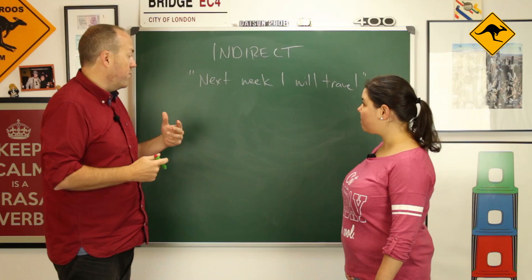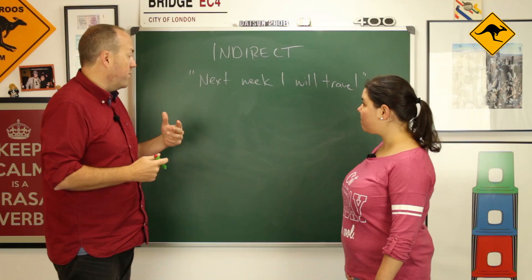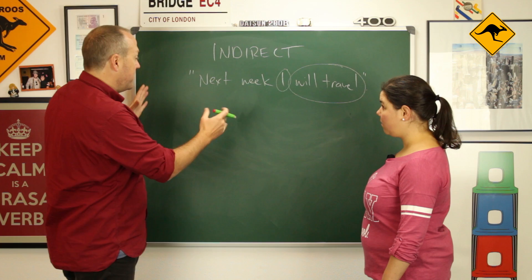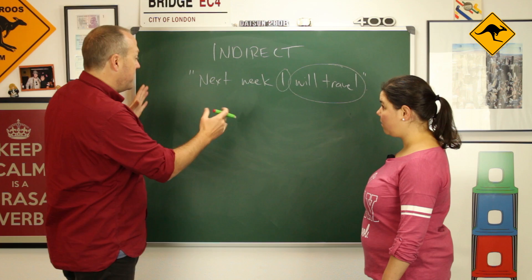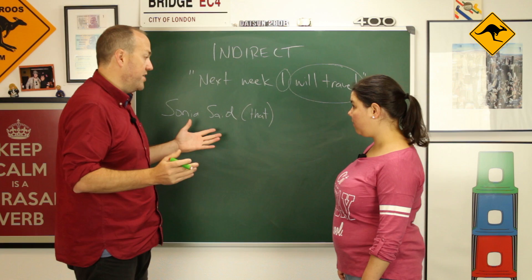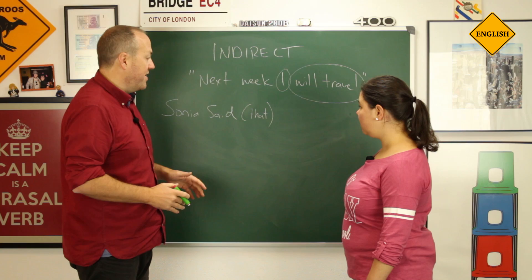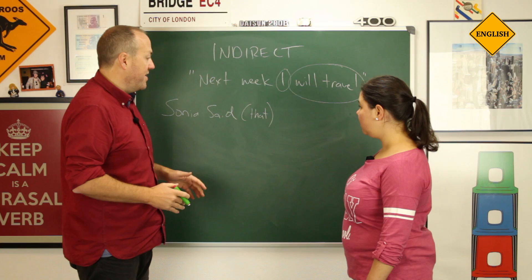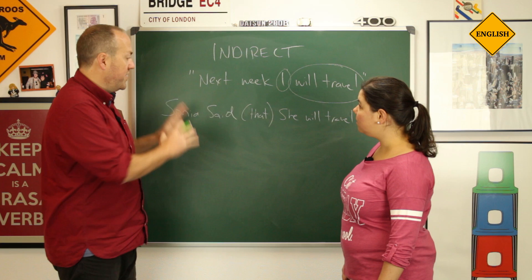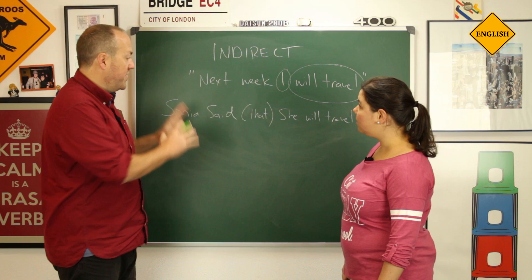When we use indirect speech, there are two things we have to change. One of them is the verb — here we have the verb for the future, 'will travel.' We also have to change any pronouns and possessive adjectives like mine, yours, his, etc. So in this sentence we have two things to change. We would say: Sonia said — with an optional 'that' — and then the speech afterwards: 'she will travel.' You can see there are no quotation marks, no comma — nothing. This is an example of indirect speech.